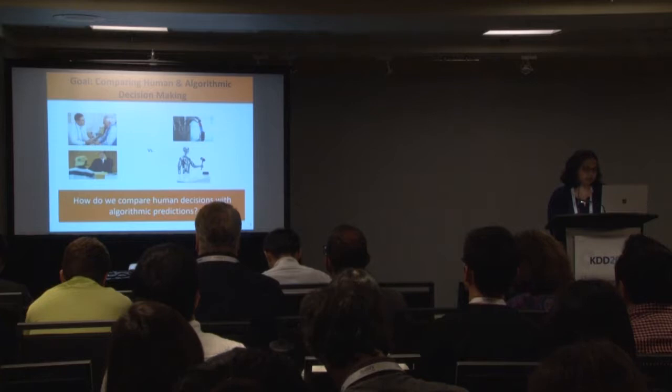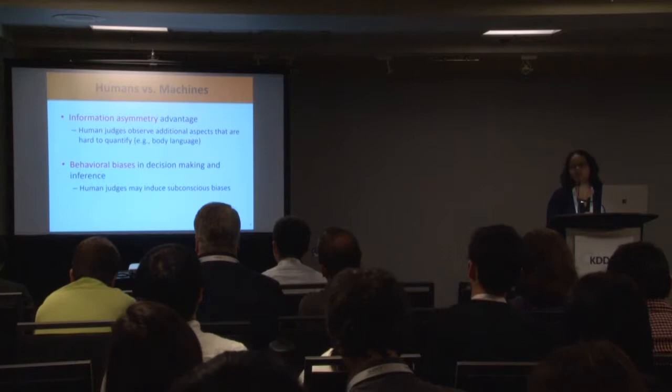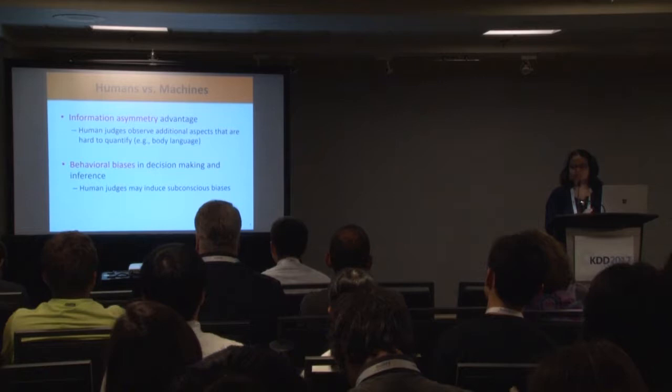Before I delve into more details, let me discuss a couple of things that are different between what humans and what algorithms see in these settings. The first is an information asymmetry advantage for humans: human judges can actually observe features that cannot typically be quantified well, such as body language and someone's behavior.